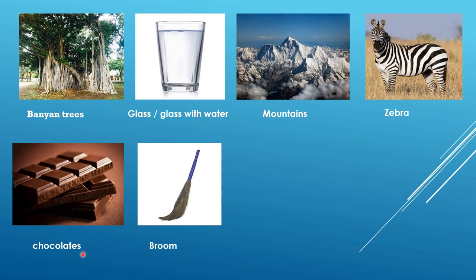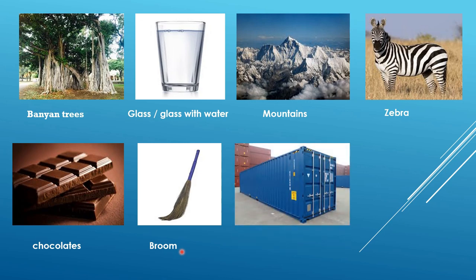Next one is something everyone uses at home but may not know the name — it is broom, b-r-o-o-m. I'm spelling it out so the image will click in your mind and you will never forget it. Next is container — c-o-n-t-a-i-n-e-r. You can say shipping container, storage container, or kitchen container.